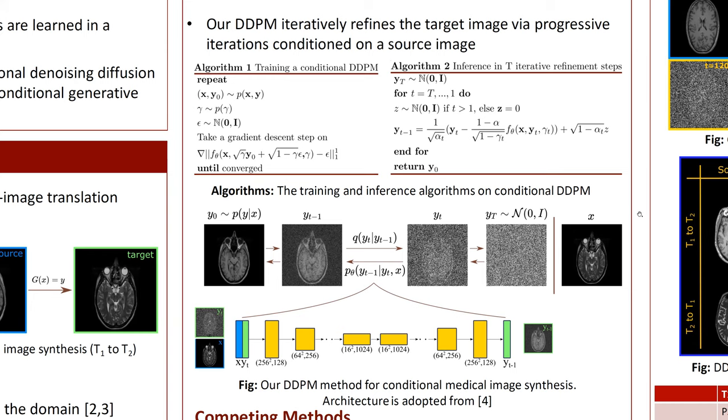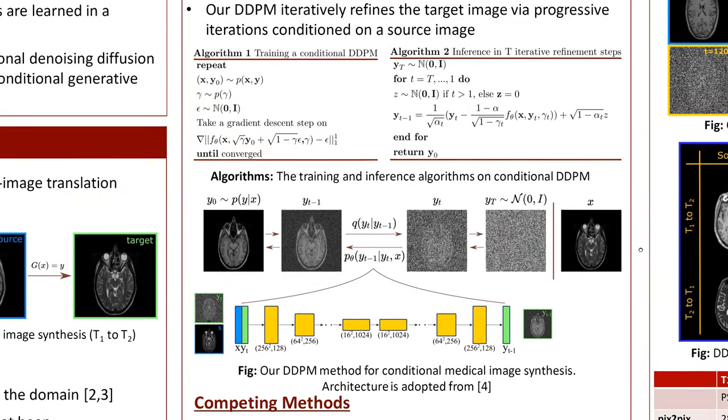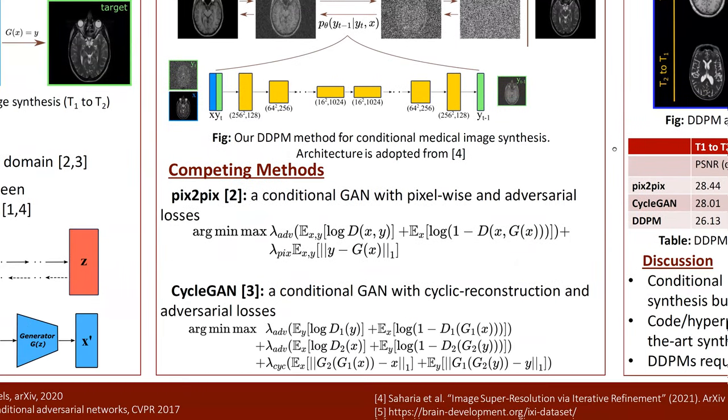We use as our last estimate of the target modality image the y_0, which is obtained at the T iterative step here. And also for the baseline methods to compare, we implemented the Pix2Pix and CycleGAN methods.